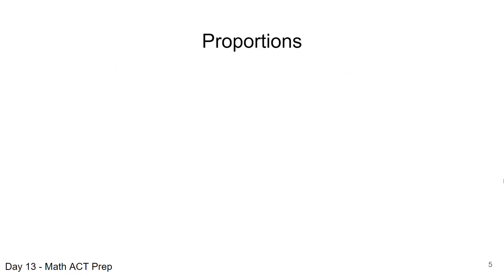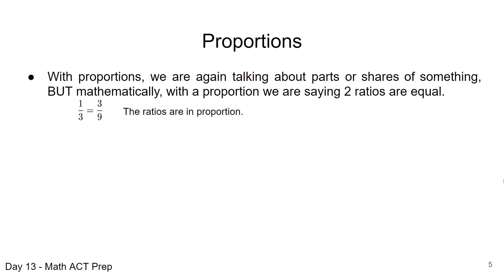Now let's talk a little bit about proportions. With proportions, we're talking about parts or shares of something, but mathematically with a proportion, we're saying two ratios are equal. That's what we want to do: set the ratios in proportion. For example, one third is equal to three ninths. Those two ratios are in proportion.